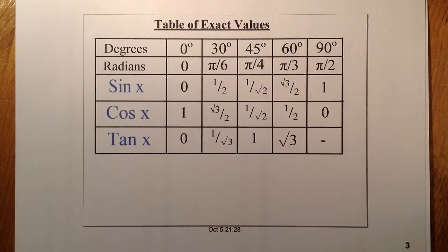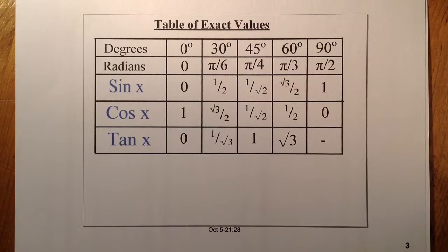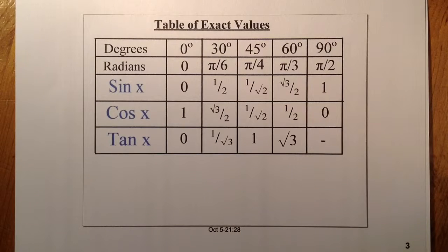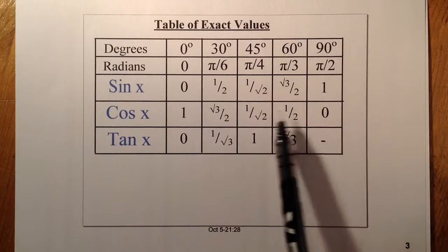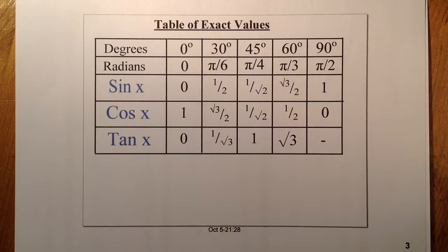Finding the exact value of angles. If the angle lies between 0 and 90 degrees, it's quite straightforward to look up the table of exact values. If it's greater than 90 degrees, we have to perform some other method. The method we use is to relate the angle given to one of the angles on the table of exact values.